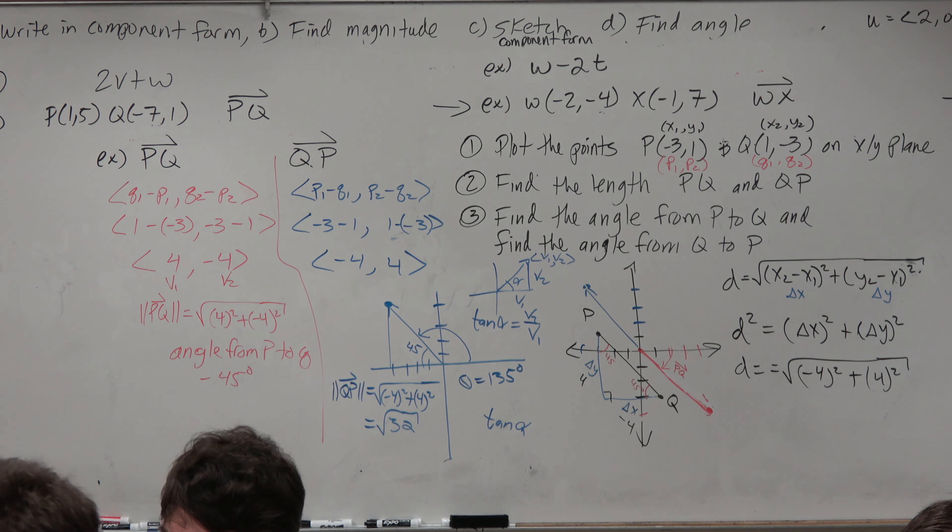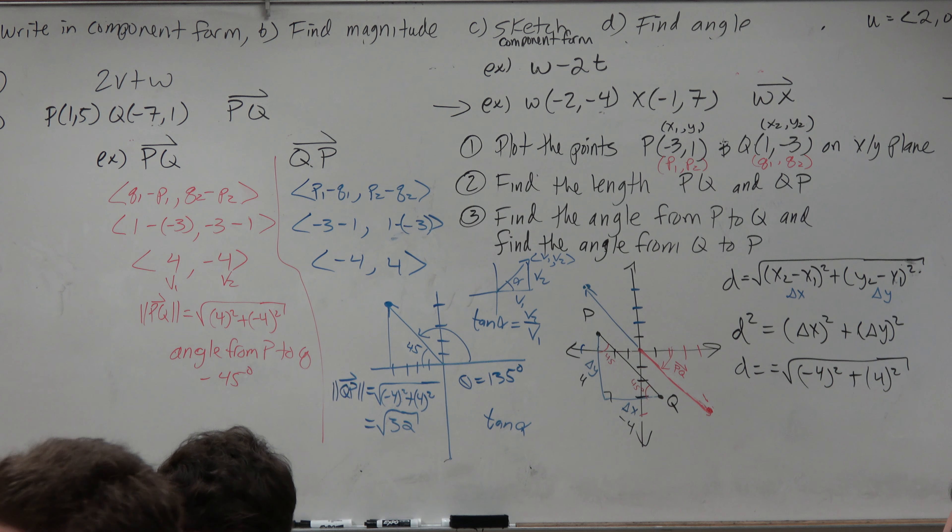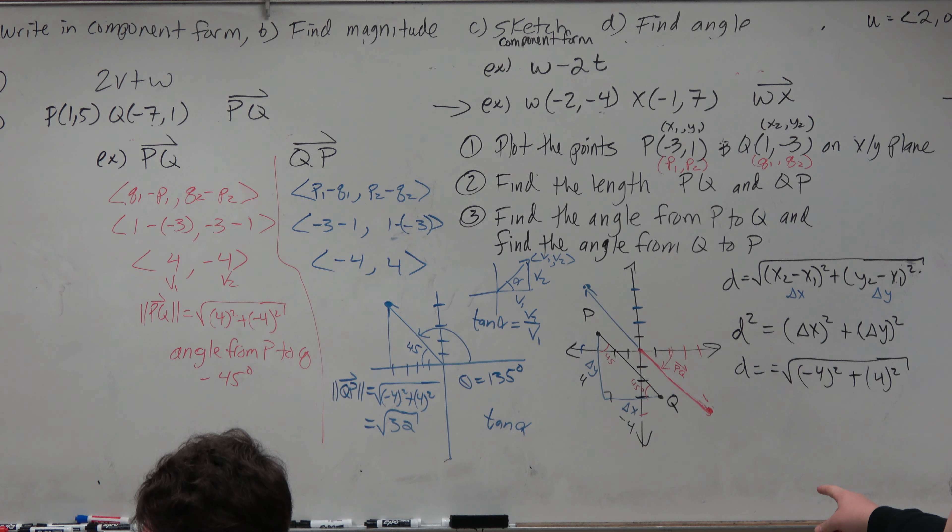Is the positive answer still correct or no? What positive answer? Like, for negative 45, like, why if you go all the way around, it's like. Yeah, so you could do 45 minus, so that'd be 315.